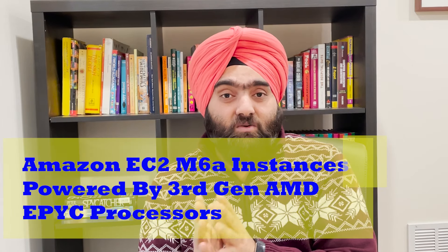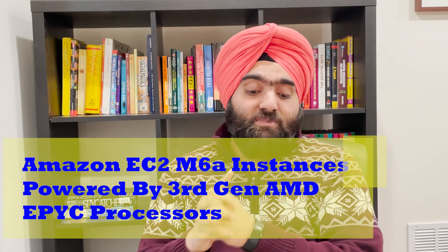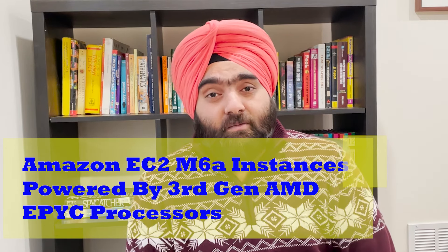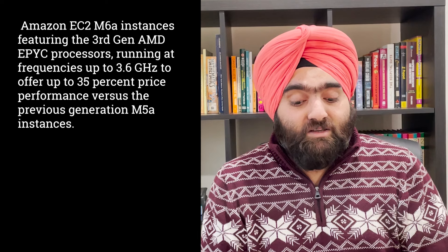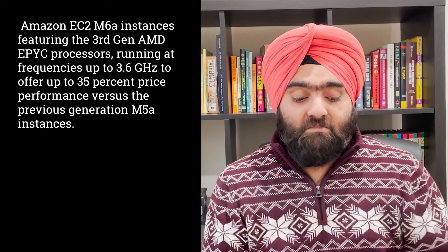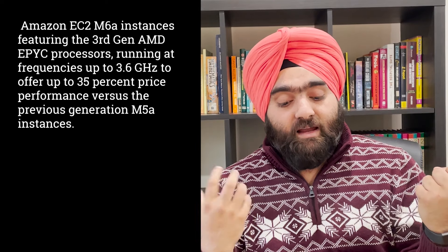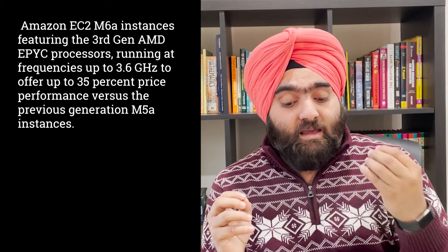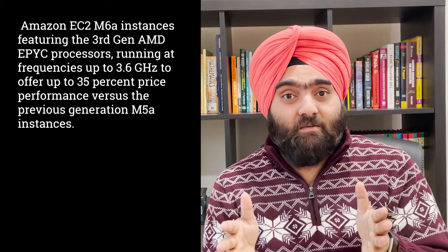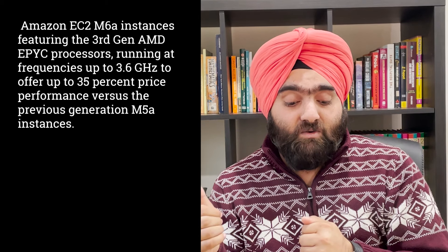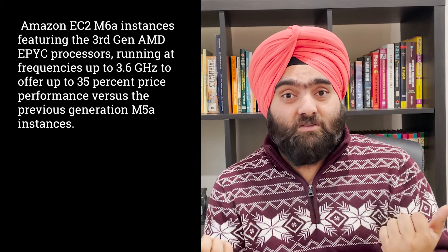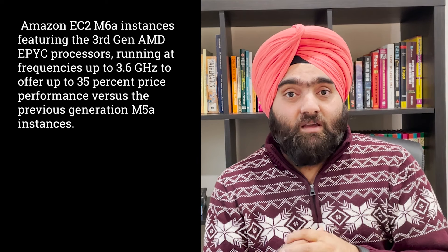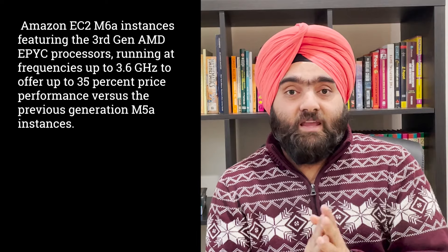Another change this year is the introduction of M6A type instances. Clients have noted that M5 instances are memory-optimized and good performance, but the price is on the higher side. AWS has introduced the third-generation AMD EPYC processor in a collaboration between Amazon and AMD. M6A instances can achieve 35% performance improvement over M5 type instances. For teams doing cost optimization, this is definitely worth looking into, as many applications may currently be using M5 instances.